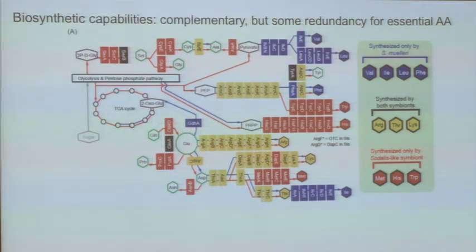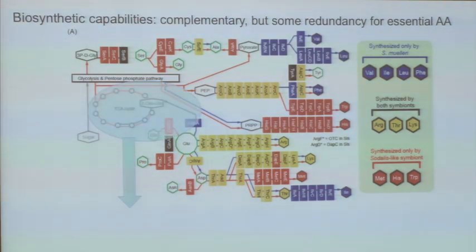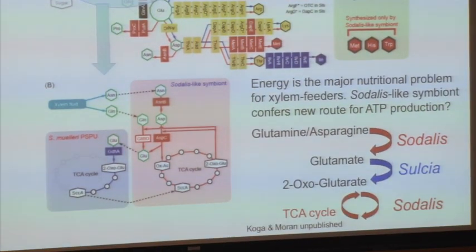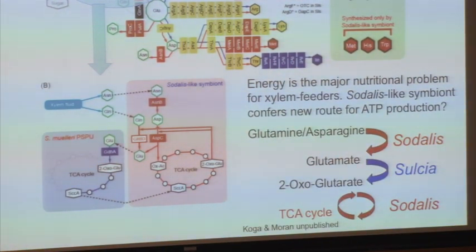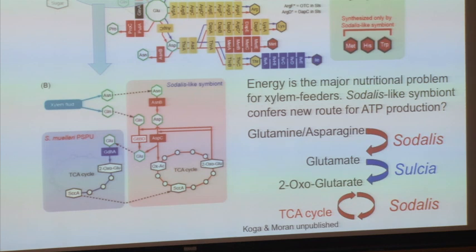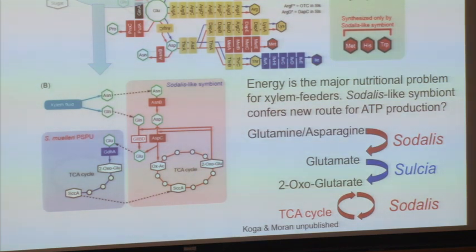There's some redundancy where both symbionts can make certain amino acids, but some are only made by Sulcia and some only by the sodalis-like symbiont, which sets in stone that you've got to keep both partners. He also did a lot of work on energy metabolism — the main thing that's massively changed — and the sodalis-like symbiont has apparently regained a TCA cycle, which may give some advantage in energy metabolism. The primary problem of feeding on xylem is that there's no sugar in it — most of the energy is actually in the amino acids themselves and they have to be used as an energy source.